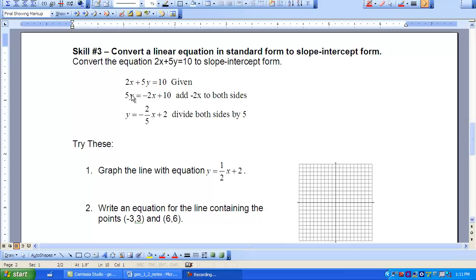So we want to isolate Y all by itself. So I need to get 2X out of the way and I need to have the 5 move out of the way. So the first thing I'm going to do is subtract 2X from both sides. So that would give me 5Y over here equals a negative 2X plus 10.